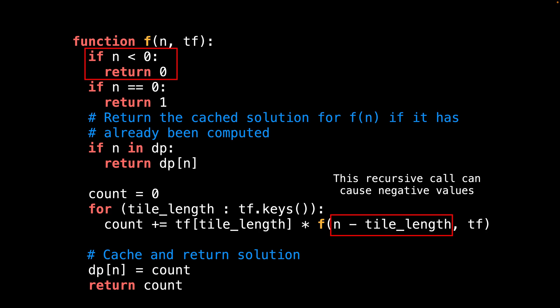The first thing I do is check if the board length is negative. If so, return zero to indicate that we were able to produce zero board tilings. It is possible to get a negative board length when we subtract the tile length from the board size in the recursive call below.